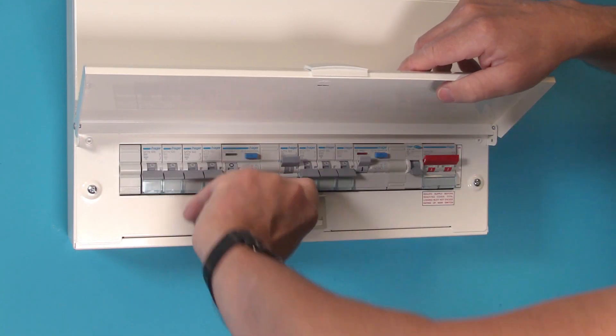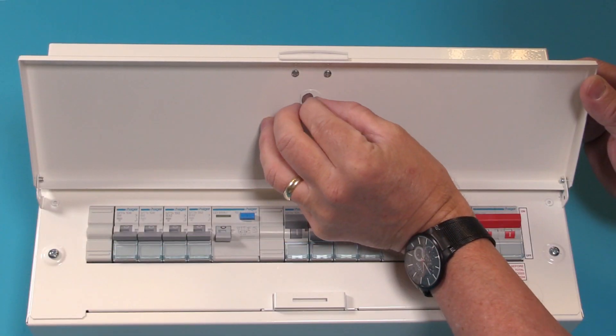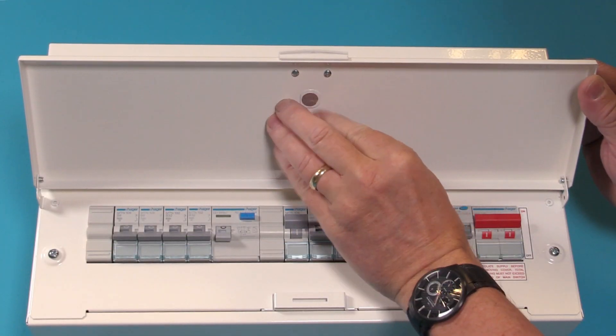Once it is no longer needed, an adhesive membrane can be placed over the hole to maintain IP rating in compliance with Amendment 3.